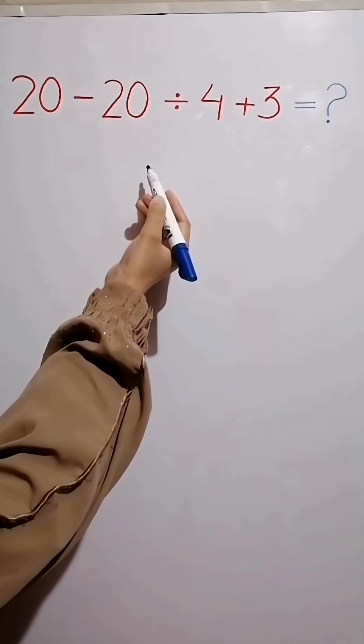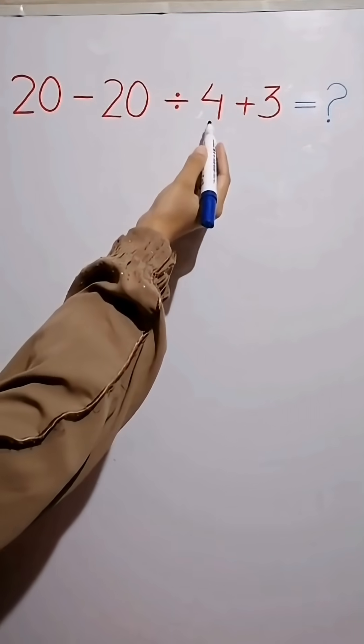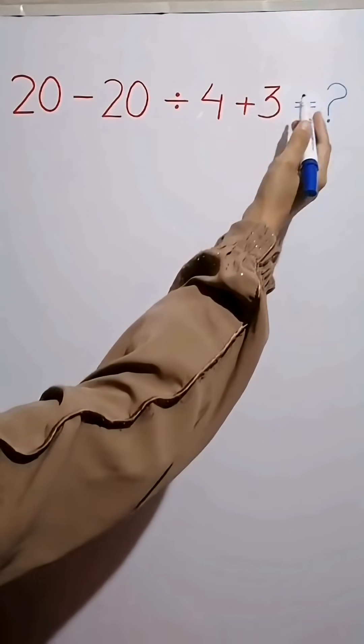Hi everyone, welcome to IQ Surge. 20 minus 20 divided by 4, then plus 3. What is the answer of this question?